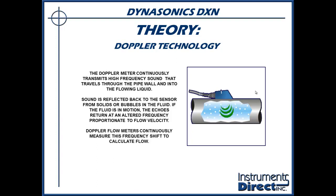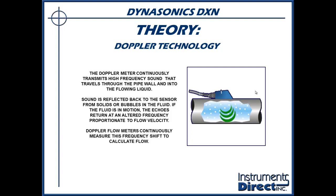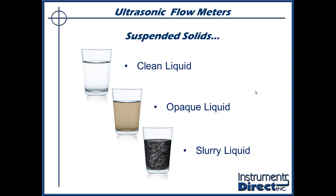A key item with the Doppler flow meter is it needs suspended particulate matter in the process stream — or you get nothing. The analogy is a police radar gun: it transmits a frequency, bounces off a car, comes back, and says the car is doing 100 miles per hour. No car on the road? No signal back. Ultrasonic Doppler flow meter with no solids in the pipe? No signal back. The house rule is 100 parts per million, 30 microns or larger, of suspended solids or aeration for this to work. For reference, the tip of a pencil is about 100 microns.